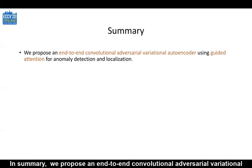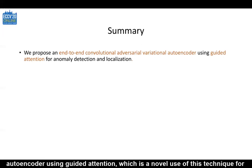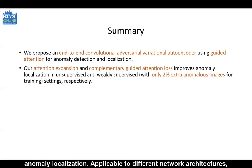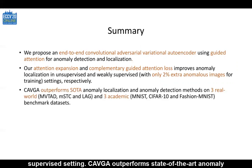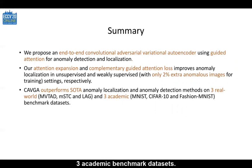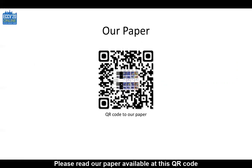In summary, we propose an end-to-end convolutional adversarial variational autoencoder using guided attention, which is a novel use of this technique for anomaly localization. Applicable to different network architectures, our attention expansion loss and complementary guided attention loss improve the performance of anomaly localization in the unsupervised setting and with only 2% extra anomalous images for training in the weakly supervised setting. CAVGA outperforms state-of-the-art anomaly localization and anomaly detection methods on three real-world and three academic benchmark datasets. Please read our paper available at this QR code and join us during our live Q&A session. Thank you for your time.